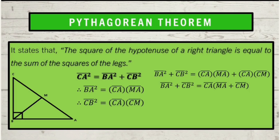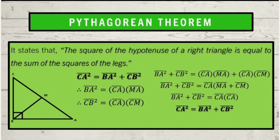So we will have segment BA squared plus segment CB squared is equal to segment CA multiplied by the sum of segment AM and segment CM. Next, substitute to its equivalent length in the figure by the segment addition postulate. Then, for the last step, simplify the right side by the product law of exponents. CA times CA equals CA squared. Therefore, the statement will be: segment CA squared is equal to segment BA squared plus segment CB squared.